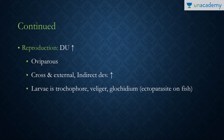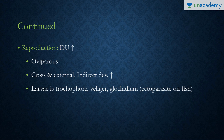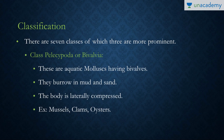Regarding reproduction, they are mostly dioecious or unisexual. Some are oviparous, with cross and external fertilization present. Indirect development is present and the larval forms are the trochophore, veliger, and glochidium, with the glochidium being an ectoparasite on fishes.